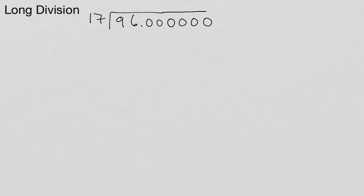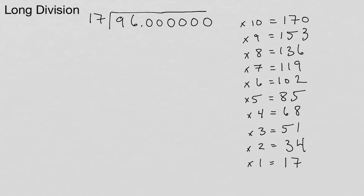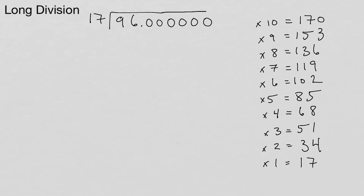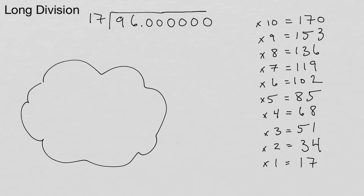What you're going to need to do to start is make a table from 1 through 10. So you have 17 times 1 gives us 17. 17 times 2 gives us 34. A way to do that in your mind is by doubling 17: 1 doubled is 2, and 7 doubled gives 14, so you carry the 1 — answer is 34.